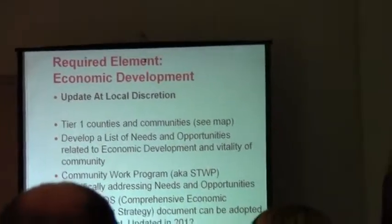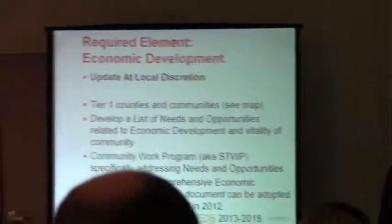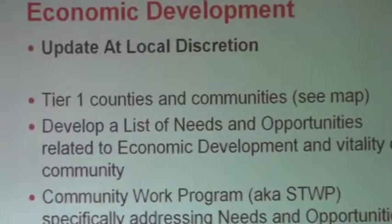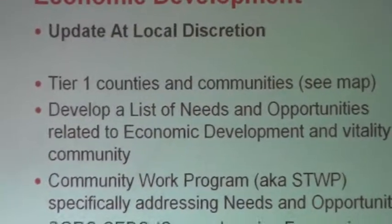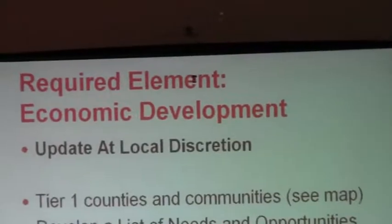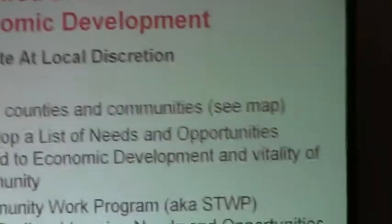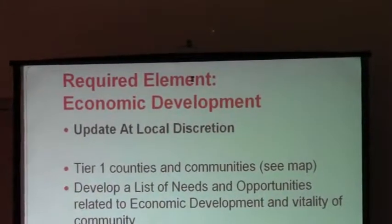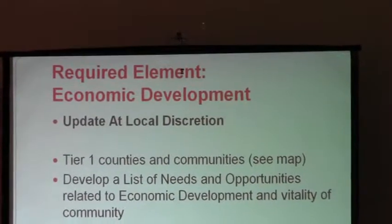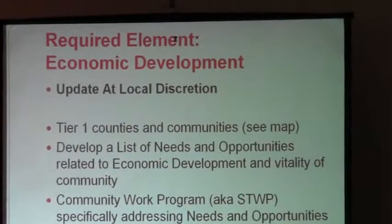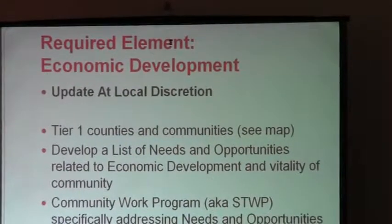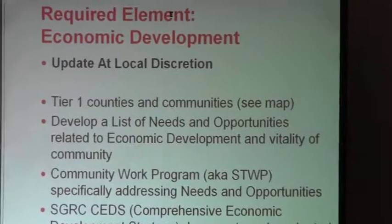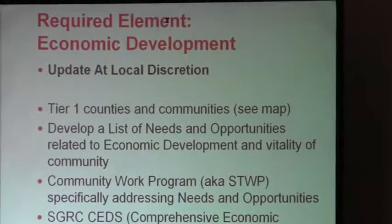The economic development element you update at local discretion, which means you can update it every six months, once a year, every five years — whenever you think it needs to be updated. Again, this is all the Tier 1 counties and communities. You need to develop a list of needs and opportunities, just like in that second core element, but it has to relate to economic development and vitality of the community. It has to be a community work program inside that element that specifically addresses the needs and opportunities related to economic development.